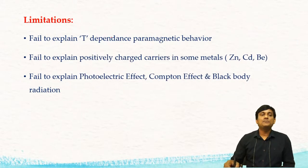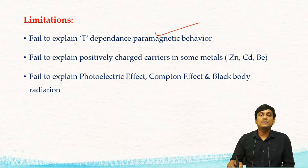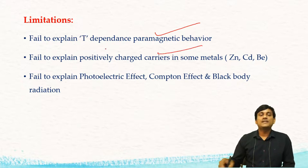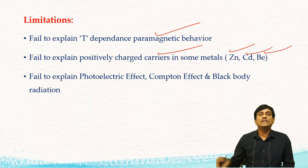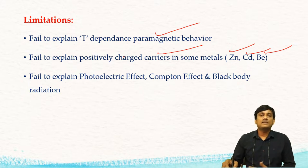And also it failed to explain the temperature dependence of paramagnetic behavior. We know that the paramagnetic behavior of metals decreases with increase in temperature — why there is a decrease in paramagnetic behavior with increase in temperature was not explained by the free electron theory. And also it failed to explain positively charged carriers in some metals. You can observe positively charged carriers in zinc, cadmium, and beryllium. According to this theory, positively charged ions are fixed and there is no movement of positively charged ions, but positively charged carriers are found in some metals — this was not explained by the free electron theory.